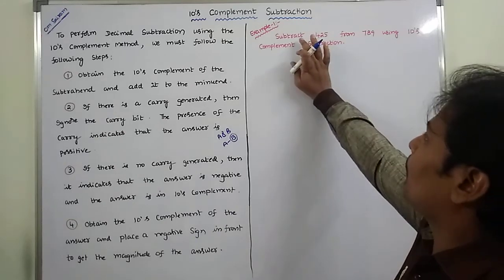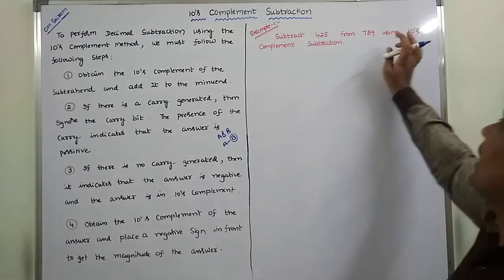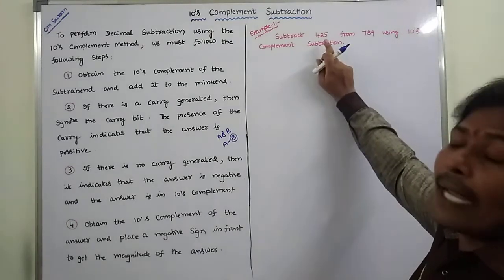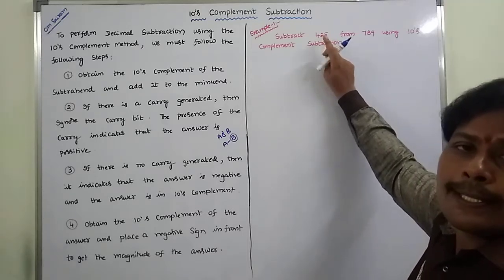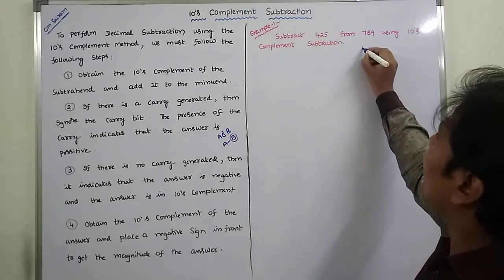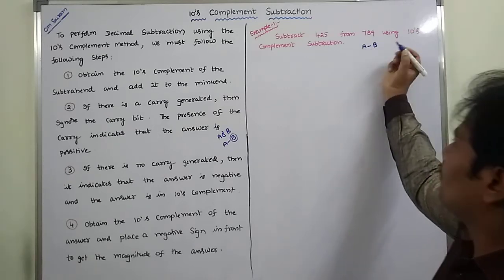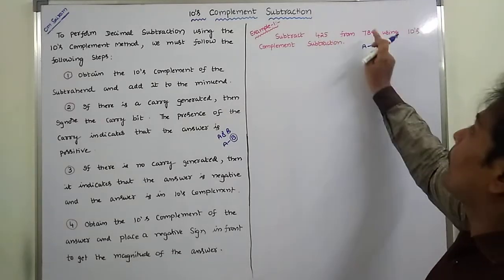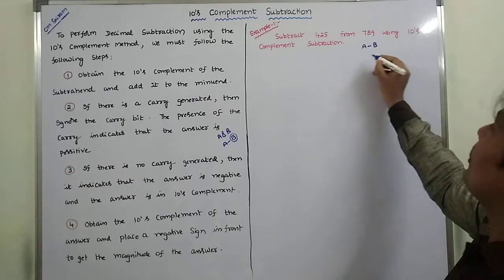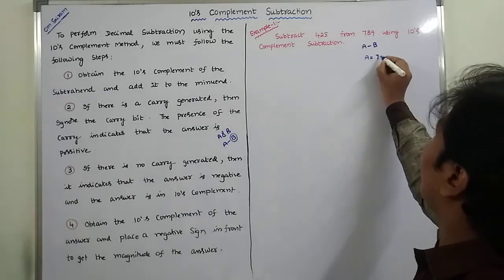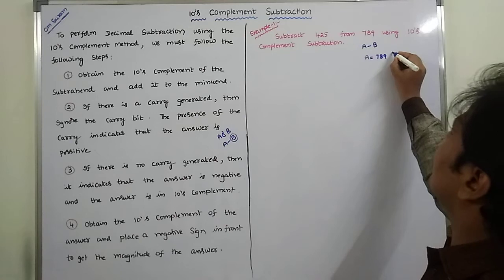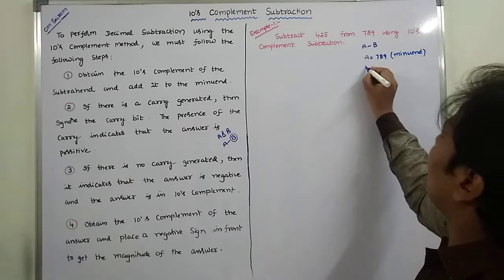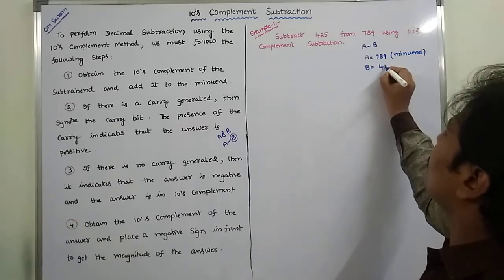First example: subtract 425 from 789 using tense complement subtraction. In this problem, 425 is the number being subtracted. We have to perform A minus B, where A is equal to 789 — this is called the minuend — and B is equal to 425 — this is called the subtrahend.